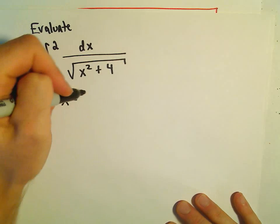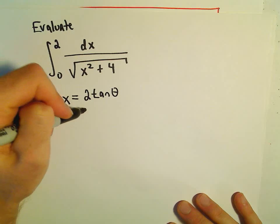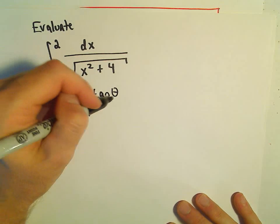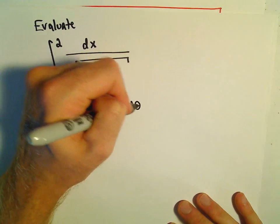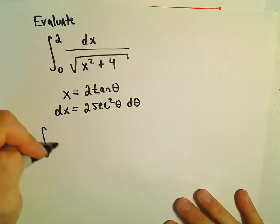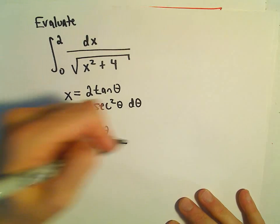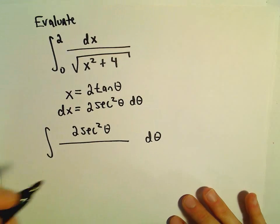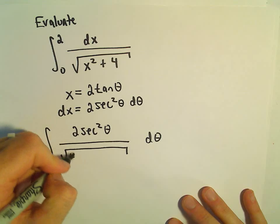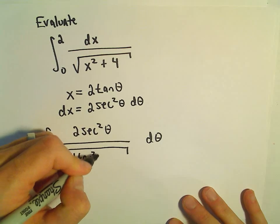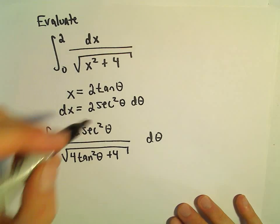Here we'll use the substitution x = 2tan(θ), so dx will be 2sec²(θ)dθ. In the numerator we'll have 2sec²(θ), and I'm going to pull the dθ off to the side. Underneath the radical we would have 4tan²(θ) + 4. But our limits of integration change.